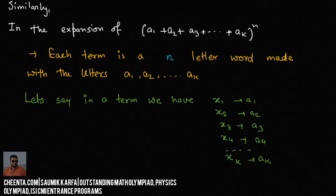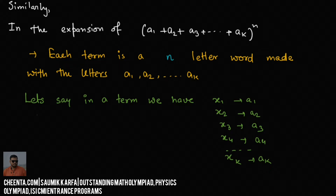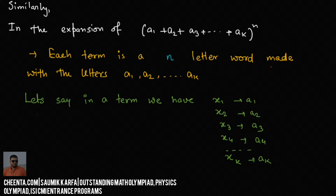Using the same idea for the expansion of (A1 + A2 + ... + AK)^N, which is the generalization of multinomial expansion, each term of the expansion would be an N-letter word made with the letters A1, A2, up to AK.